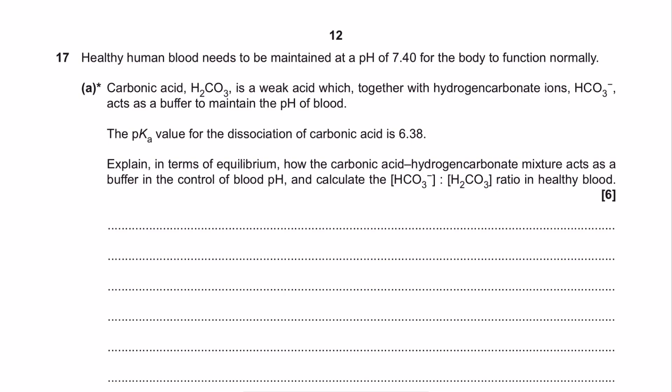Explain, in terms of equilibrium, now whenever we see that, we want to talk about shift. How the carbonic acid-hydrogen carbonate mixture acts as a buffer in the control of blood pH. And calculate the ratio, now this would be the A-minus compared to the HA, if we think about our notes, ratio in healthy blood. So I'm going to go through the full answer now and how I would respond to this in the exam.